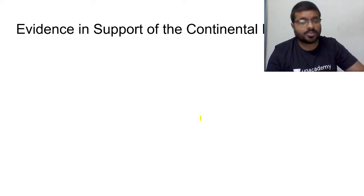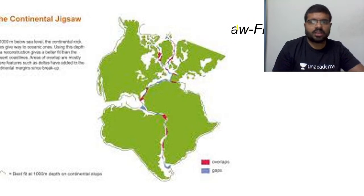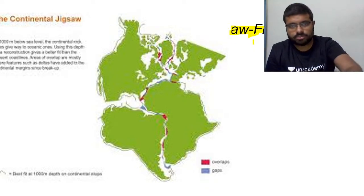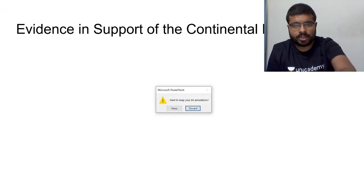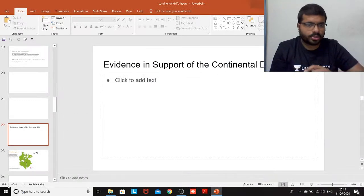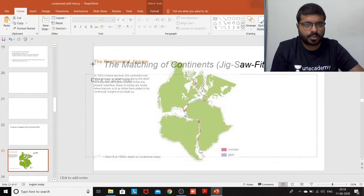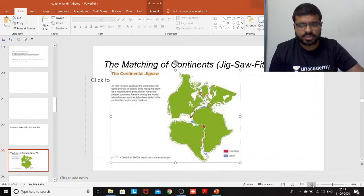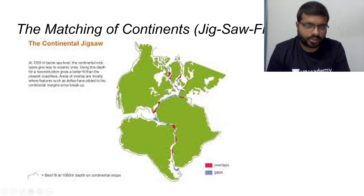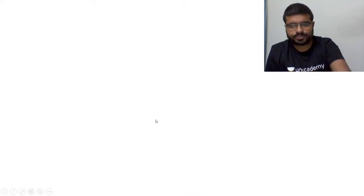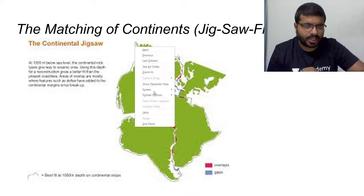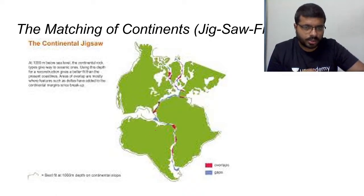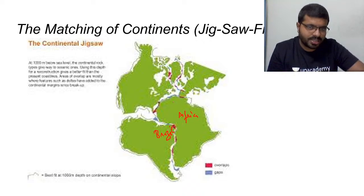The most important evidence supporting continental drift theory is the jigsaw effect, also called the matching of continents. If you look at a map, South America's eastern coast — specifically the Brazilian bulge — fits perfectly with the depression around the Guinea coast of West Africa, just like pieces of a jigsaw puzzle fitting together.